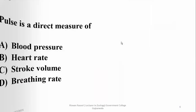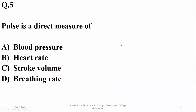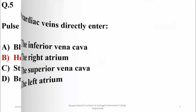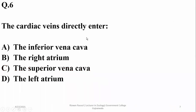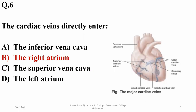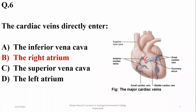Question number five: pulse is a direct measure of heart rate of an individual. Cardiac veins directly enter the right atrium of the heart — they pour their deoxygenated blood into the right atrium directly, instead of inserting into the vena cava or other parts.